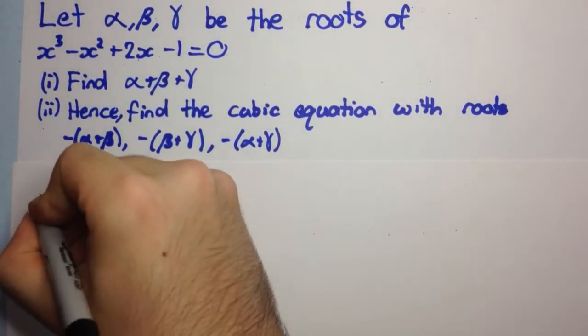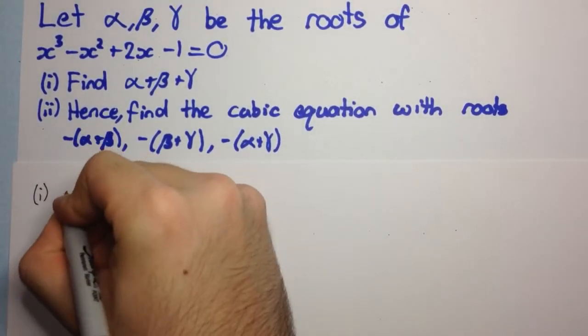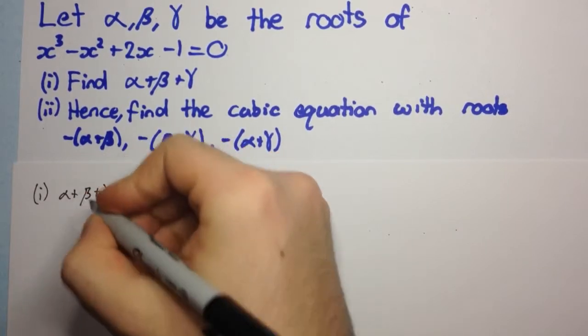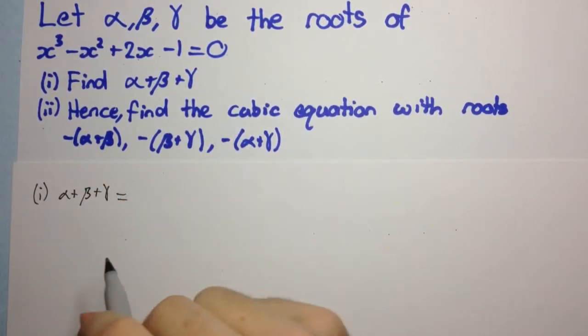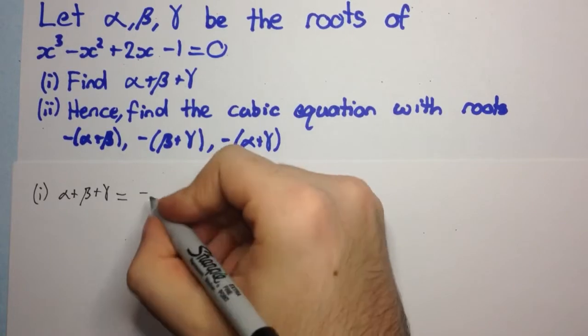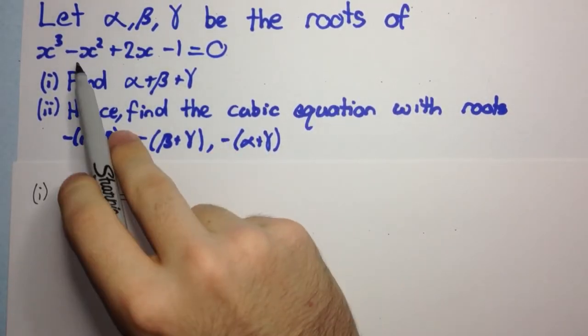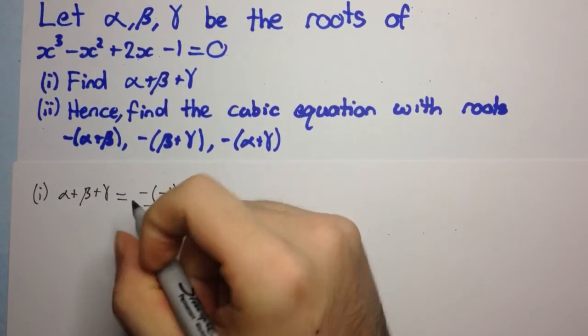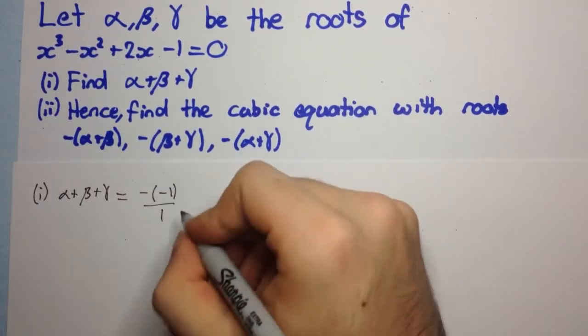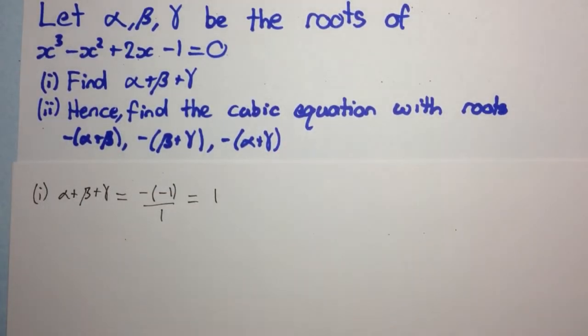So the first bit, you should all know how to do. It's just the sum of roots. This is actually a 3-unit type of question. So the sum of roots is minus b on a, so we have minus into what's b? b is minus 1, that's the coefficient of x squared, and a is 1, that's the coefficient of x cubed. So we have 1 here.